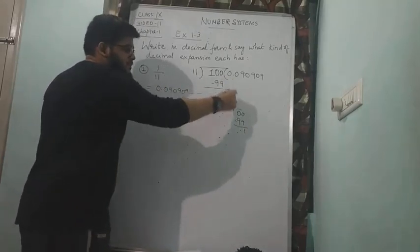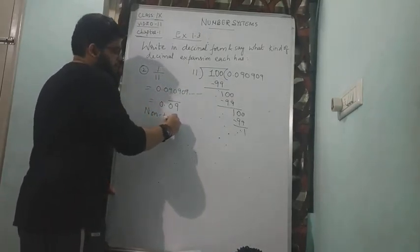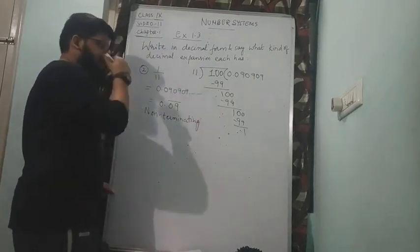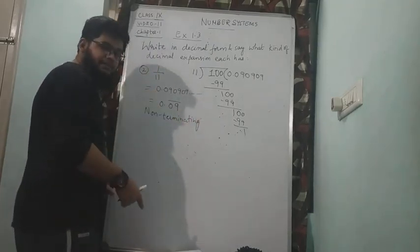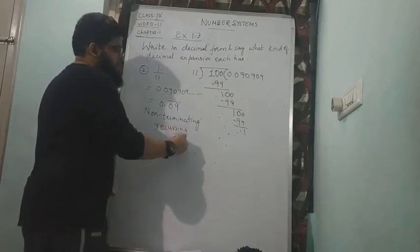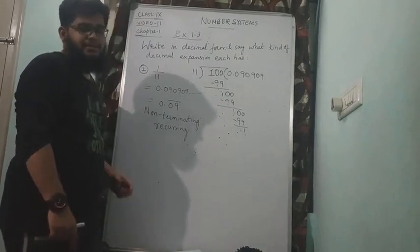Now first of all, because the division is non-stopping, it will be called as non-terminating. And because the values are getting repeated themselves, it will be recurring. So this is an example for non-terminating and recurring decimal expansion.